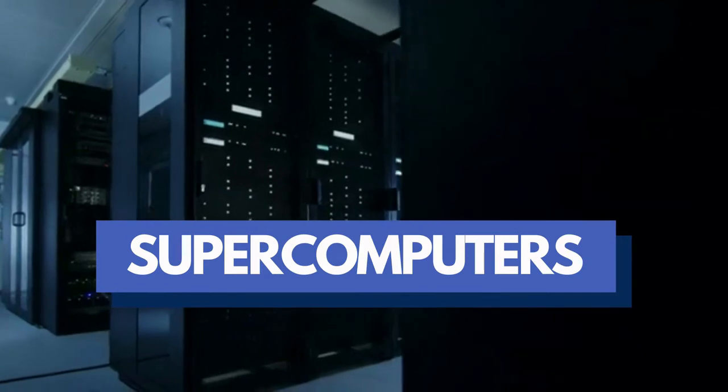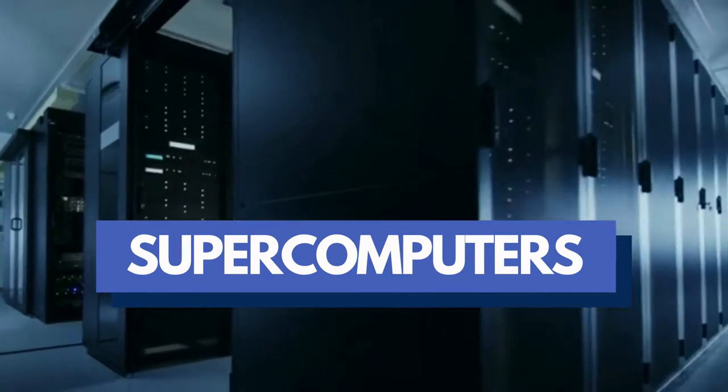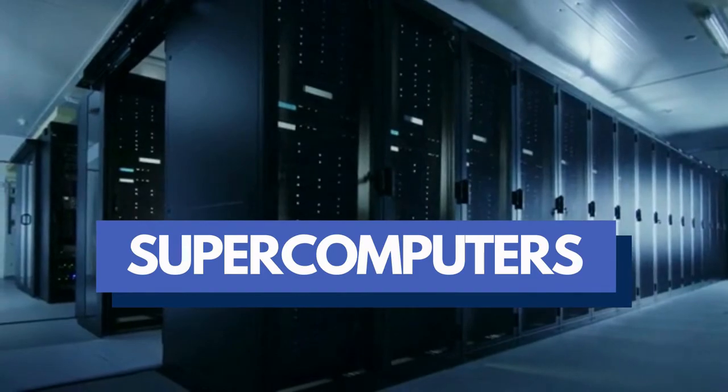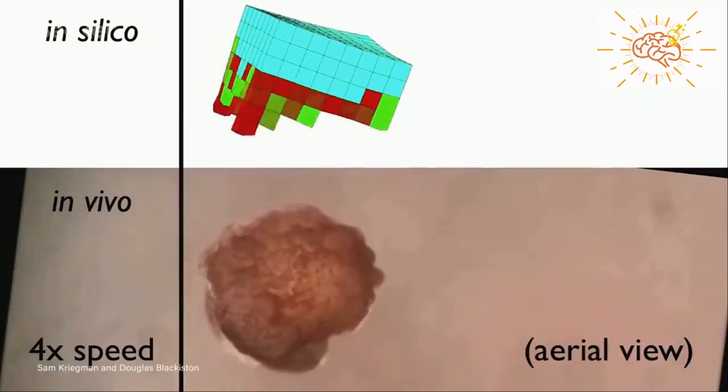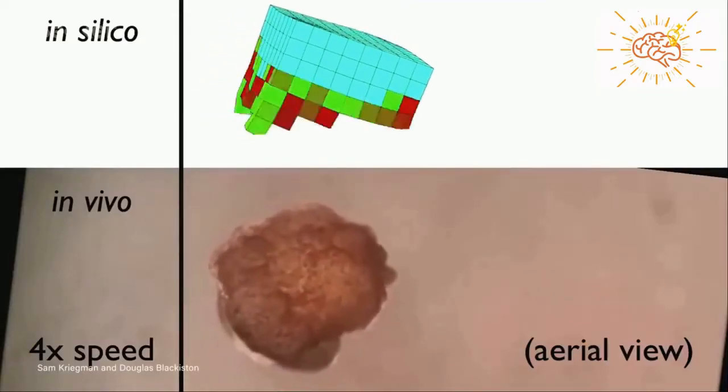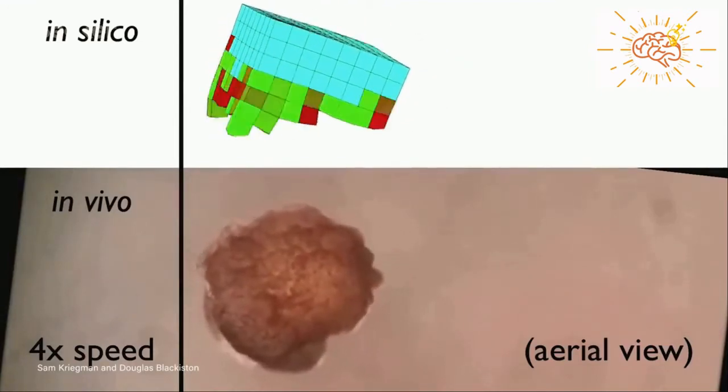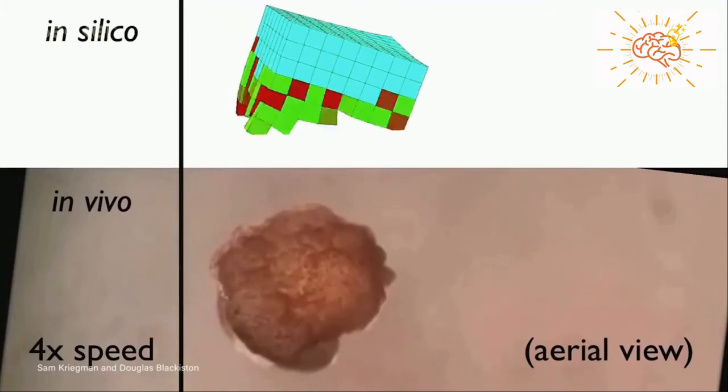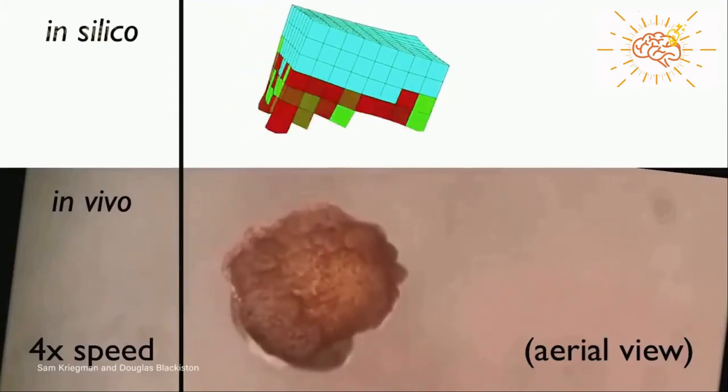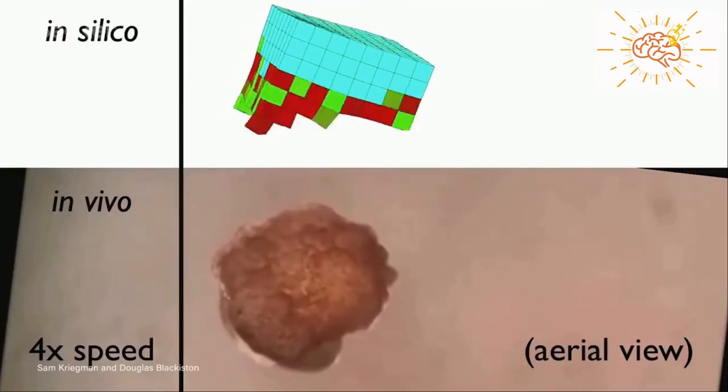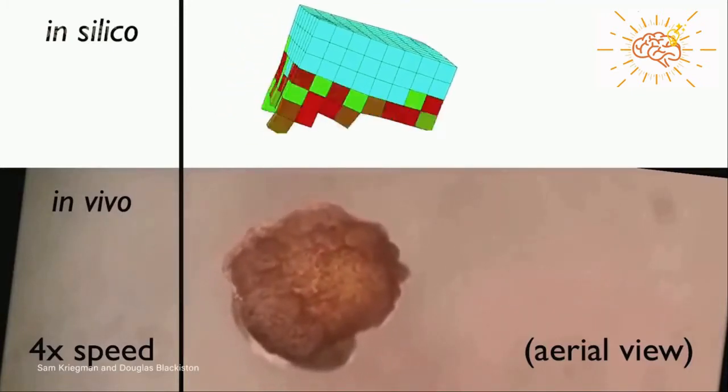Then, the team of researchers ran an evolutionary algorithm on a supercomputer based on the data. As you can see, the red and green cells are contracting cells, and the blue cells are the non-contracting cells. The researchers had made tons of configurations like this to figure out which would give the best movements. That means, only this particular combination of cells will only give this type of movement.